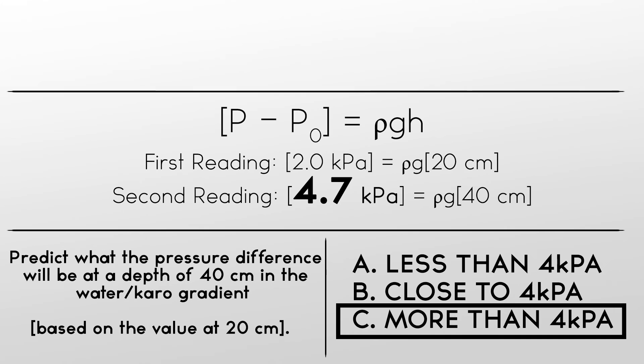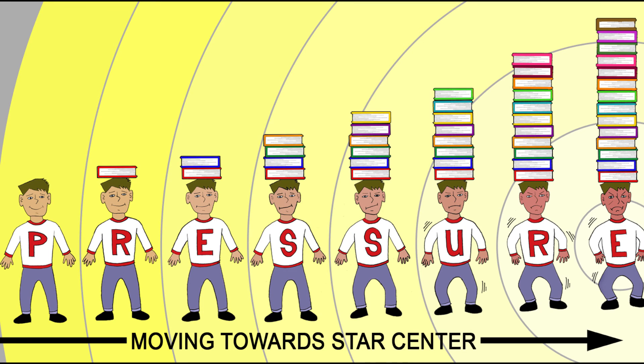We know that if the cylinder only contained water, the increase in pressure would be twice as big, 4 kilopascals. The pressure in the water plus Karo syrup is still due to the weight of the overlying material, but now the pressure grows more rapidly near the bottom of the cylinder because the overlying weight grows more rapidly due to the higher Karo density.